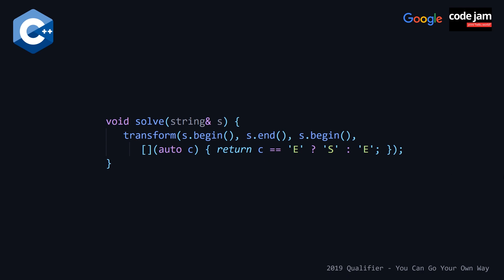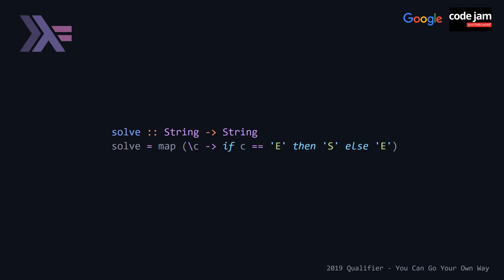Last but not least, our Haskell solution. Here we solve this making use of the map function with a lambda that is identical to the ones we saw in the Java, C++, and Python solutions. The backslash followed by the parameter in parentheses indicates a lambda, and what is to the right of the arrow operator is what gets evaluated.